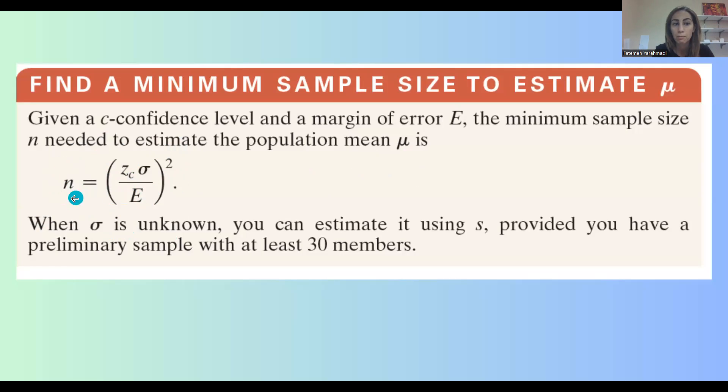So to find the minimum sample size, we need the critical value z sub c, we need sigma, which is population standard deviation, and we also need e, which is the margin of error.